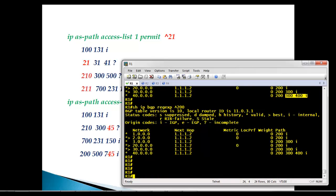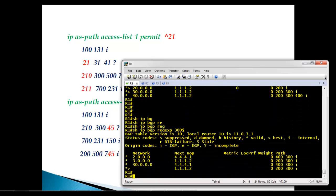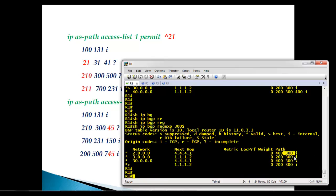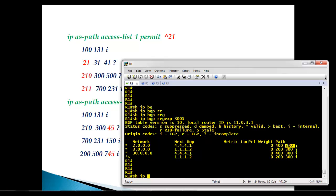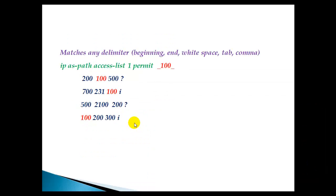Similarly, using '300$' with 'show ip bgp regular-expression' displays all prefixes ending with 300, meaning all prefixes originating from AS300. The dollar symbol at the end means the AS path must end with 300. Running this against the BGP table shows all prefixes where 300 is the last AS in the path — which are the routes originated in AS300.